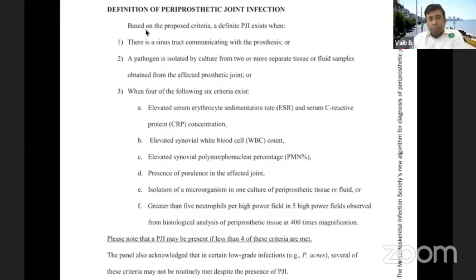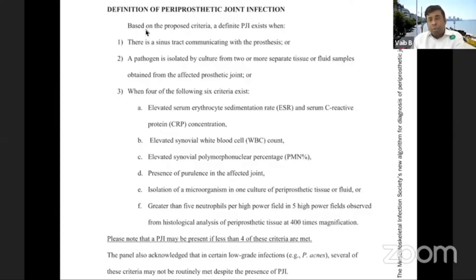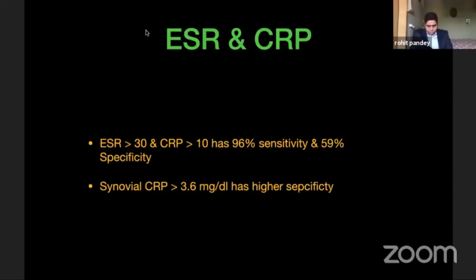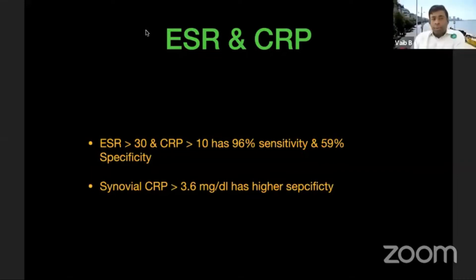The Parvisi group guideline states that periprosthetic joint infection is present if there is a sinus tract communicating with the prosthesis, or a pathogen isolated by culture from two or more separate tissue or fluid samples from the affected joint, or four of the following six criteria: elevated ESR, elevated CRP, elevated synovial WBC, elevated PMNs in synovial fluid, obvious presence of purulence, and isolation of a microorganism in one culture, or greater than five neutrophils per high-power field at 400x magnification. It acknowledges that low-grade infections may not routinely meet these criteria.